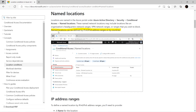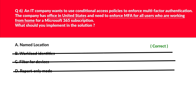If we look at the official documentation under named location, it's clearly written that named location can be identified by IPv4 or IPv6 address ranges or by countries. There was a mention of country in the question — it quite fits our requirement. Therefore we'll lock A, named location, as the correct answer.